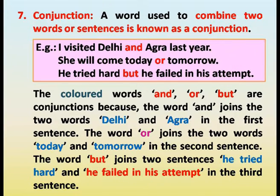Conjunction. A word used to combine two words or sentences is known as a conjunction. Examples: I visited Delhi and Agra last week. She will come today or tomorrow. She tried hard but he failed in his attempt. The colored words and, or, but are conjunctions. The word and joins Delhi and Agra. The word or joins today and tomorrow. The word but joins two sentences.